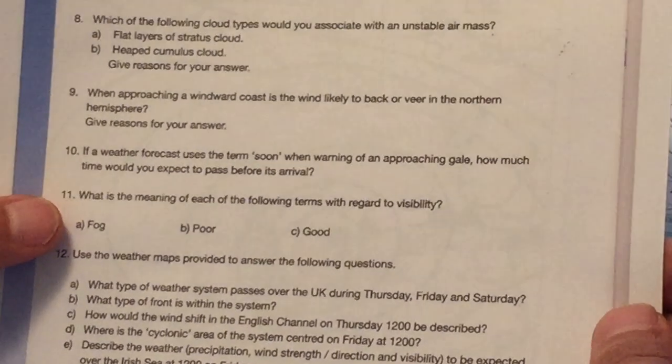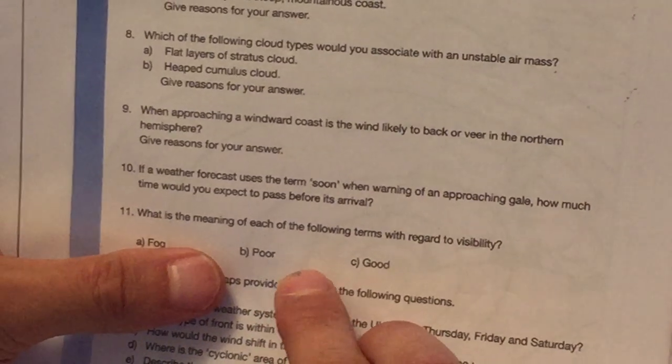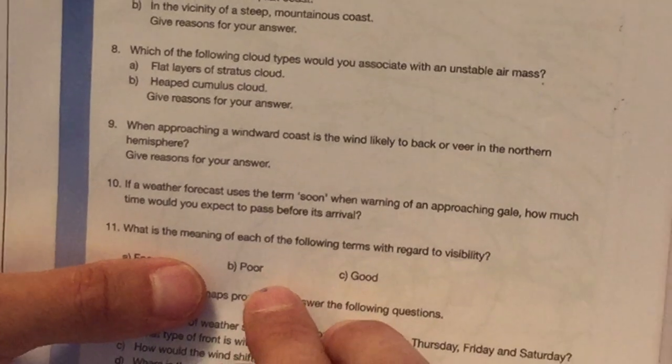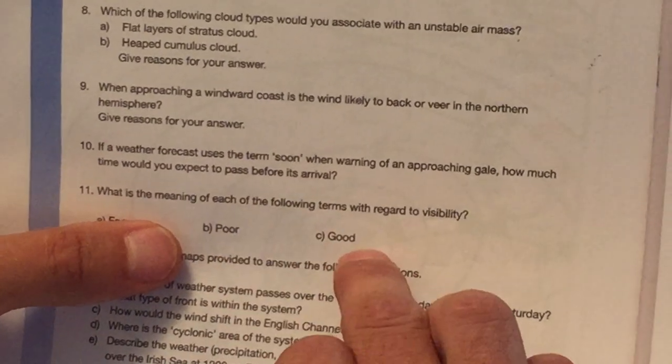What is the meaning of each of the following terms with regard to visibility? Okay, fog. Less than a thousand meters. Poor, a thousand meters to guess two kilometers, or two nautical miles. Two kilometers, that's the Canadian in me. Two nautical miles. And good, I think, is anything after five nautical miles.